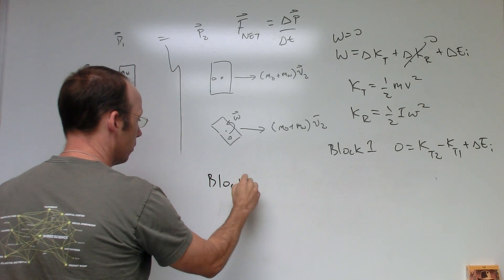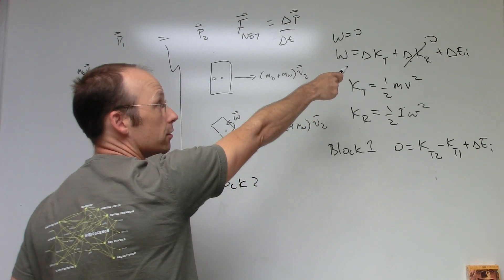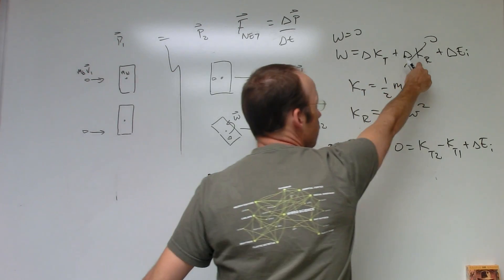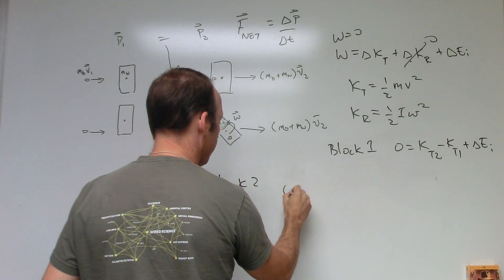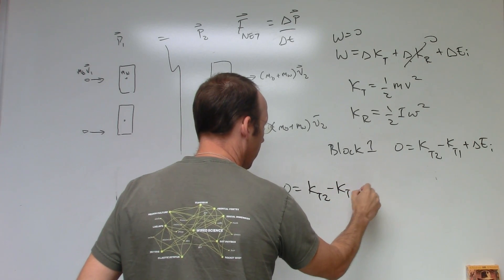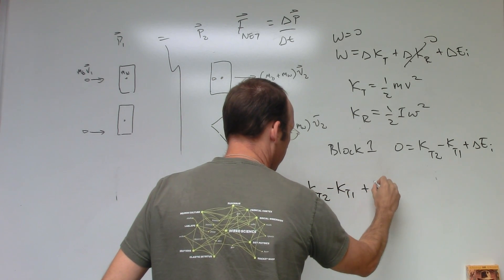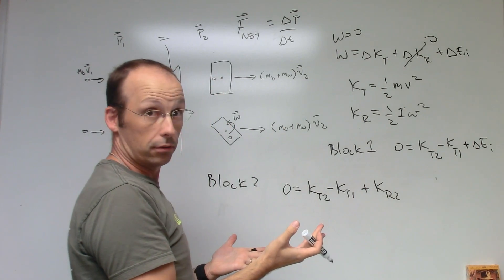Now let's look at block two. The only difference is that I do have rotational kinetic energy. The initial kinetic rotational energy is zero. So I get zero equals KT2 minus KT1 plus K rotational two minus initial rotational, which is zero, plus delta E internal.